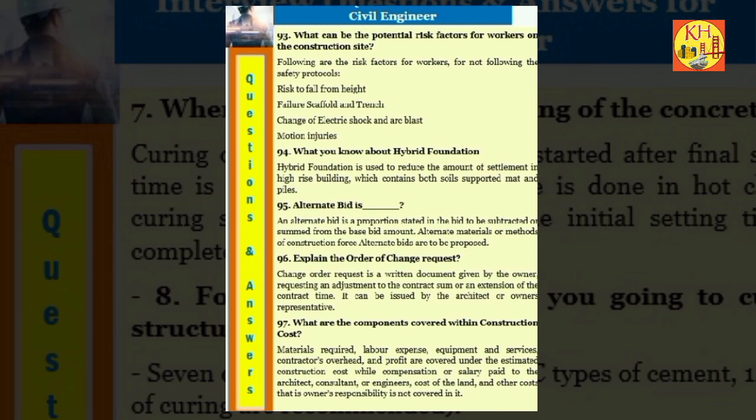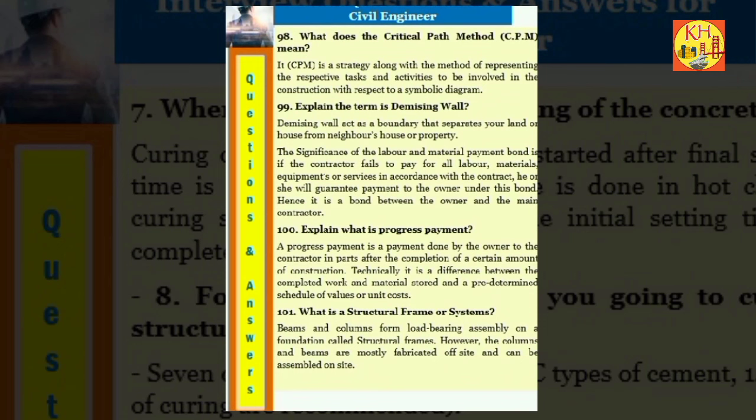Question 96: Explain the order of change request. Change order request is a written document given by the owner requesting an adjustment to the contract sum or an extension of the contract time. It can be issued by the architect or owner's representative. Question 97: What are the components covered within construction cost? Materials required, labor expense, equipment and services, contractors overhead and profit are covered under the estimated construction cost, while compensation or salary paid to the architect, consultant, or engineers, cost of the land, and other costs that is owners responsibility is not covered in it.